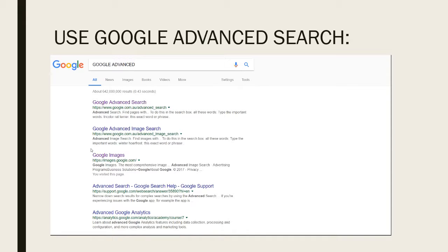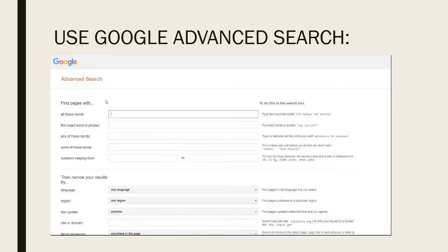Once you've identified some information gaps, you need to use those search terms — make sure you use multiple search terms and really specific ones. I tend to use Google Advanced rather than just the basic Google level. If you've never used Google Advanced before, just google 'Google Advanced' and you'll get to the page — it gives you a selection of more specific boxes and helps you order your search terms.